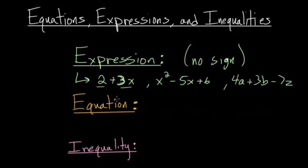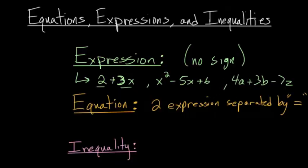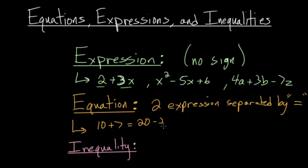An equation is essentially two expressions separated by an equal sign. For example, you might have something like 10 plus 7 is the same thing as 20 minus 3. You can see on both sides of the equation that it evaluates to 17. So this is what we would call a true equation because both sides are the same value.